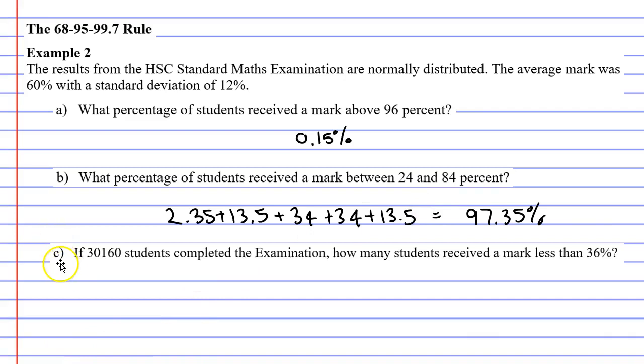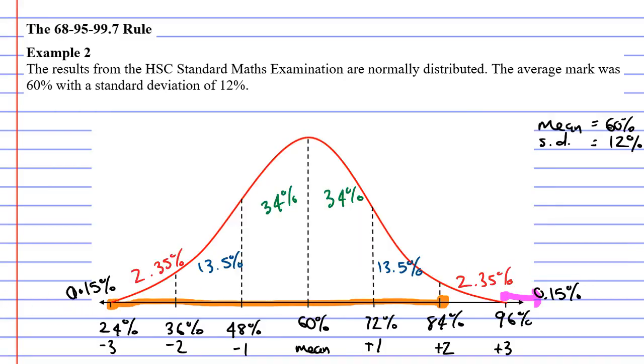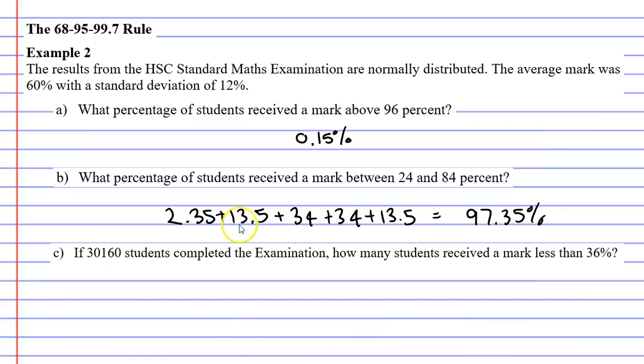Moving on to question C, it says if 30,160 students completed the examination, how many students received a mark less than 36%? Going back to our bell curve, we label the part where they got 36% and we're looking at students that went below that, got marks below 36%. We can see we've got two percentages here: 2.35% above that pink line and 0.15%. So we'll add them together: 2.35% plus 0.15%.